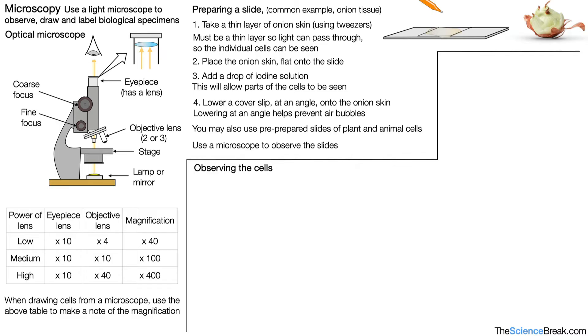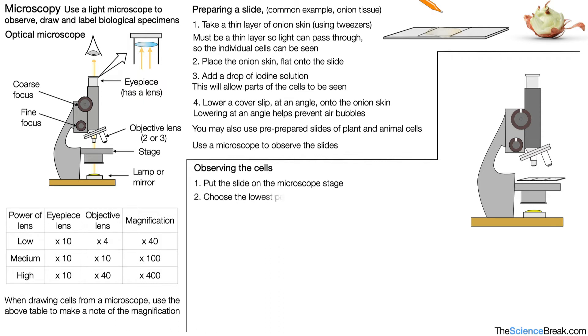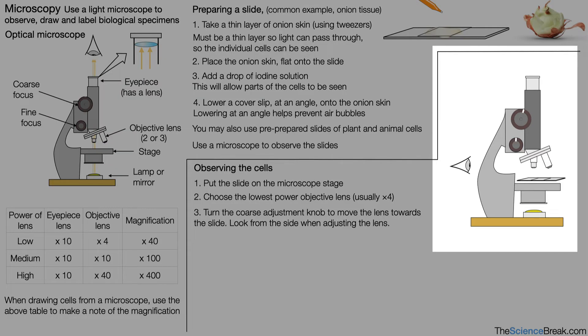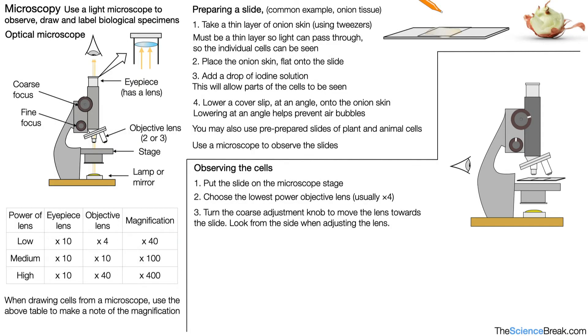Observing the cells. Here's our microscope again so we can see what to do. First we would put the slide onto the microscope stage. There's our slide. We would choose the lowest power objective lens. That's usually the x4 objective lens. And we would turn the coarse adjustment knob to move the lens towards the slide. When we do this, we would look from the side when adjusting the lens. So there's our eye looking from the side. And we would move the lens towards the slide.